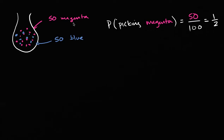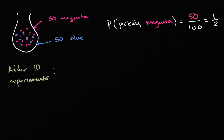Now let's say you actually start doing the experiment. You literally take a bag with 50 magenta marbles and 50 blue marbles, and then you start picking the marbles. You see what color you picked, put it back in, and then do it again — we're going to call each pick an experiment. So after 10 experiments, let's say you have picked out seven magenta and three blue.